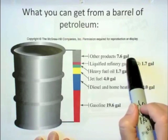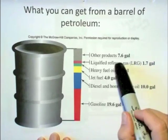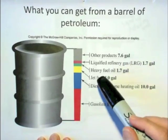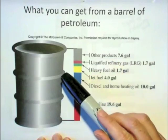And then other products, 7.6 gallons. Other products include, which we'll talk about more next semester, but a lot of the starting materials for plastics come from petroleum.